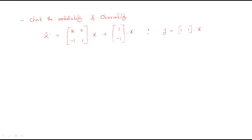Hello everyone. In this session we will discuss a problem: check the controllability and observability. The system is given as x-dot = Ax + Bu and y = Cx. We are asked to find out both controllability as well as observability.